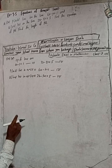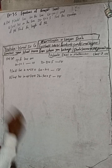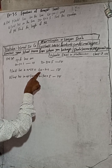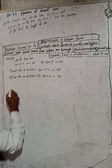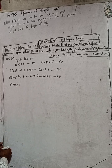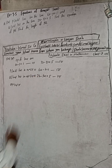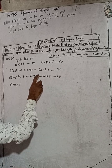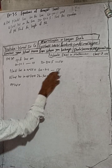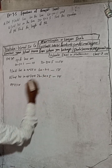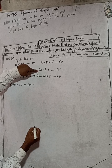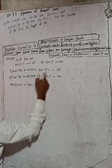Now we solve equations 3 and 4 to find the values of a and b. To eliminate b, we multiply equation 3 by 2. This gives us 12a minus 2b equals 2, which is equation 5.